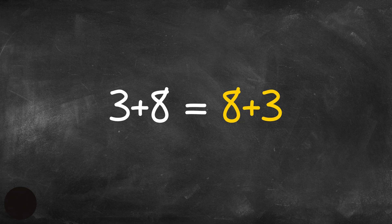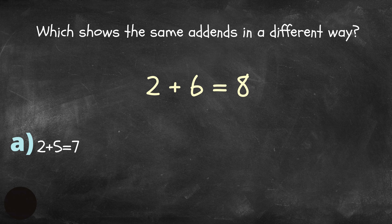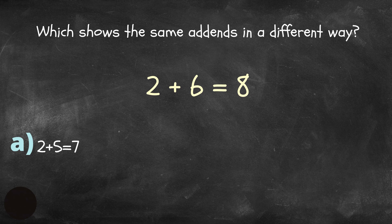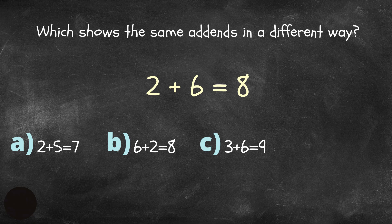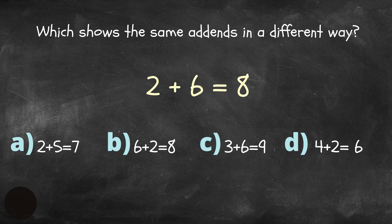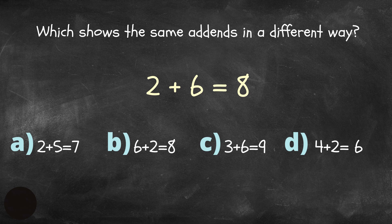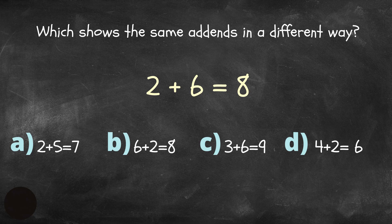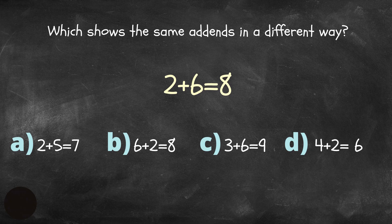Time to show what you know. Which shows the same addends in a different way? So, the question is 2 plus 6 equals 8. Our first choice is A, 2 plus 5 equals 7. B, 6 plus 2 equals 8. C, 3 plus 6 equals 9. And D, 4 plus 2 equals 6. Which one of these choices is the same as 2 plus 6 equals 8, but in a different way? Choose the one that has the same addends, but in a different order. If you pick B, you certainly have the correct answer.